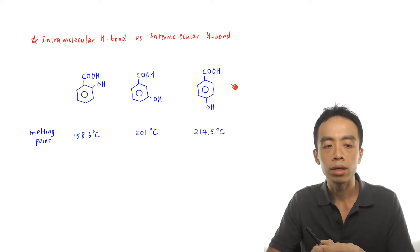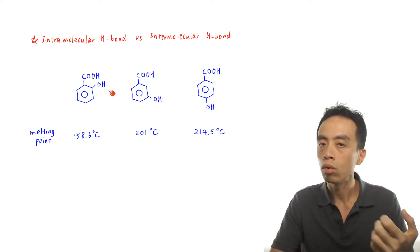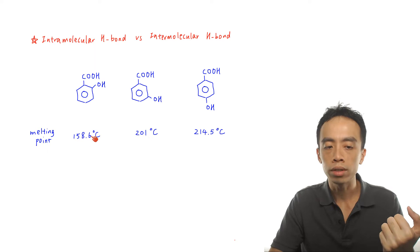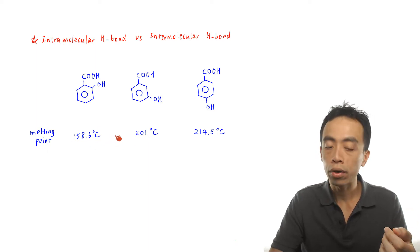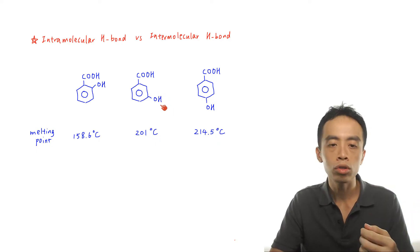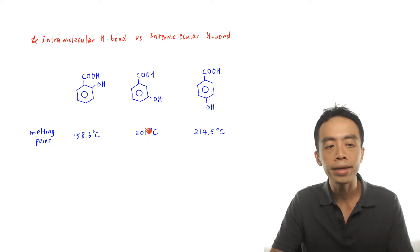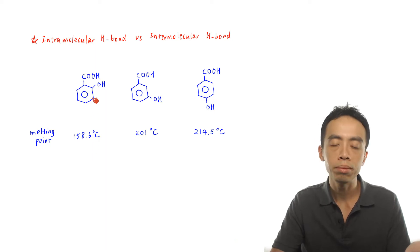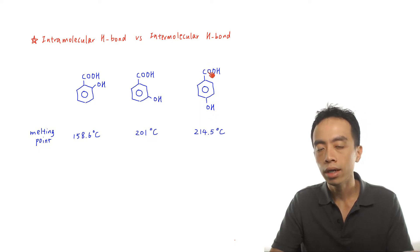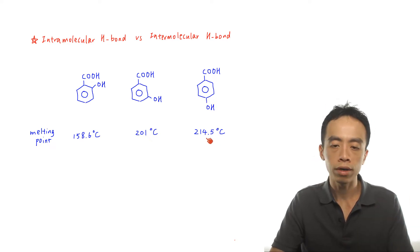You'll notice there is a difference in melting point. 2-hydroxybenzoic acid, where the OH group and the acid group are closer together, has a melting point of 158.6°C, which is the lowest. 3-hydroxybenzoic acid has a melting point of 201°C, slightly higher. For 4-hydroxybenzoic acid, where the OH group is pointing directly opposite the acid group and furthest away, the melting point is the highest at 214.5°C.